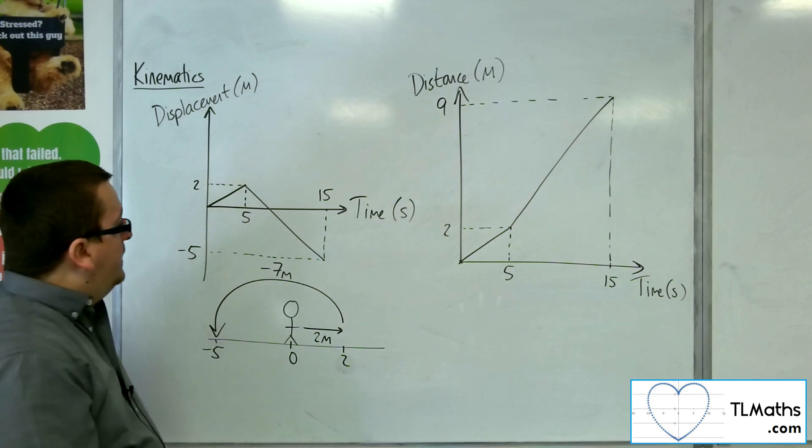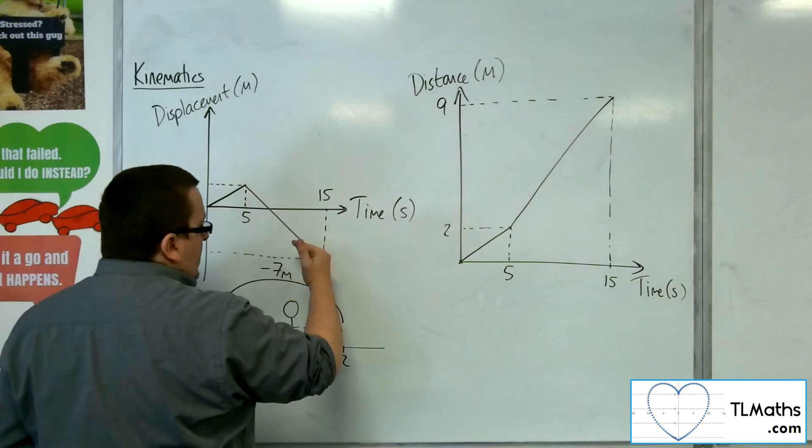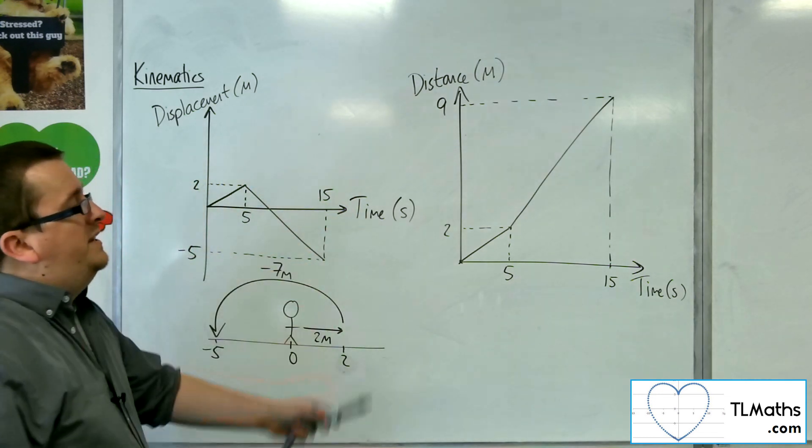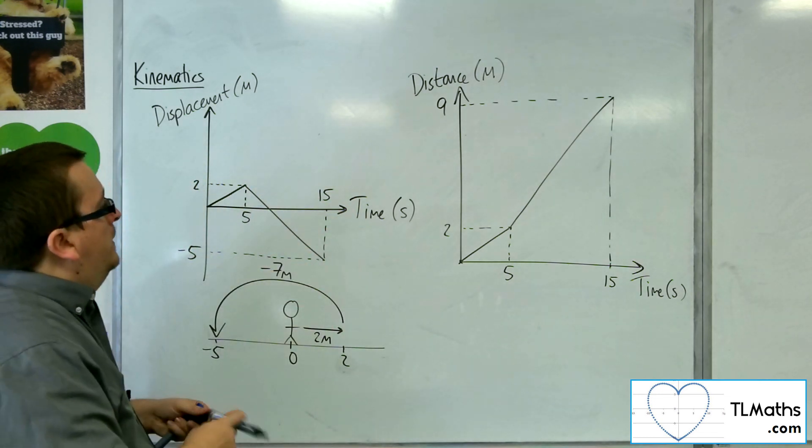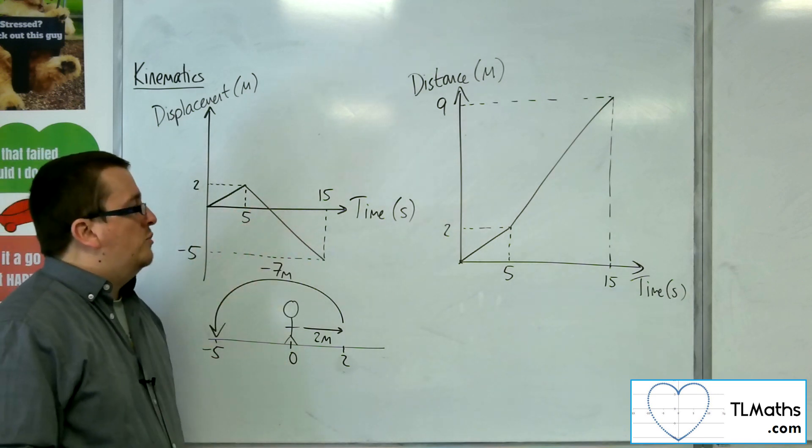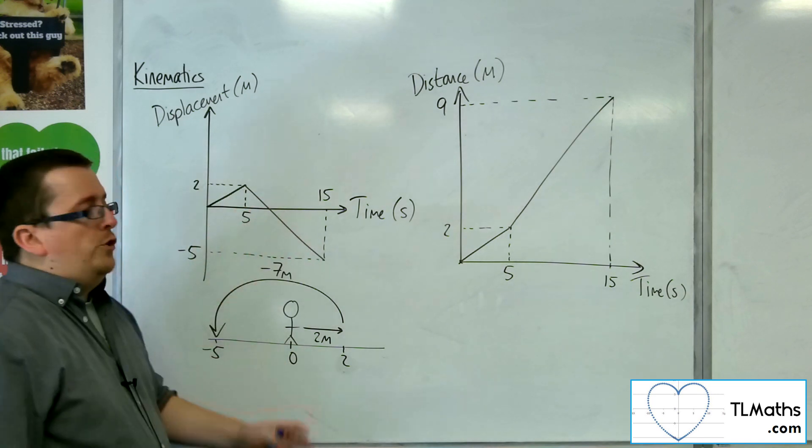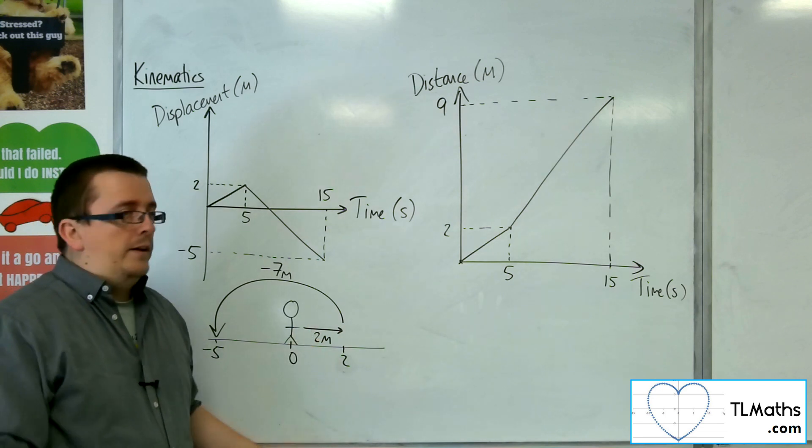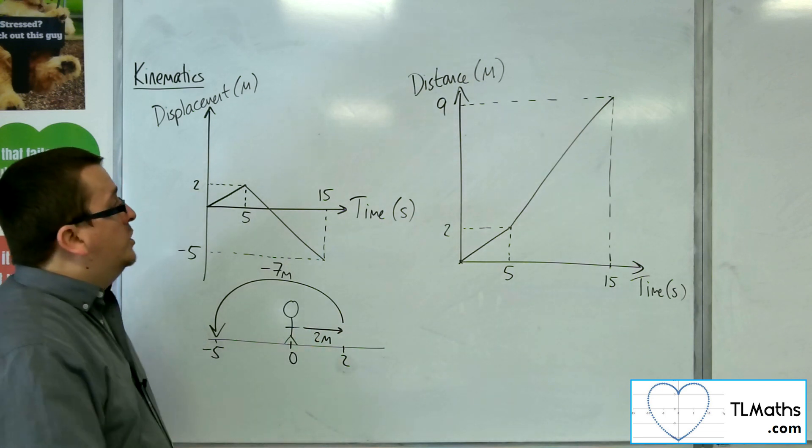So, it's like each of these negative gradient lines are reflected up to make the distance time graph. Now, what can we read from a displacement time or distance time graph? Well, what we're used to with straight line equations is reading off the gradient, finding the gradient. What could that represent?